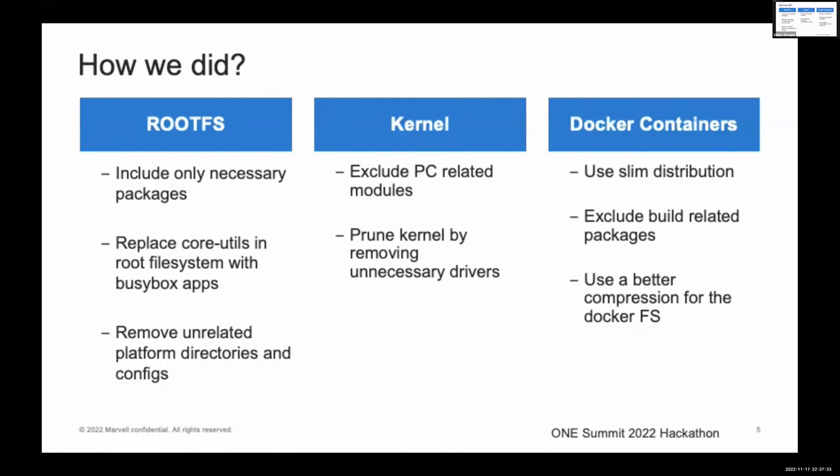For the docker containers, we did the following three optimizations. Currently, SONiC uses the full base distribution image for the docker containers. Instead of that, we used the slim distribution version of the docker image. The slim version is roughly half the size of the full version. We also removed build-related packages from the docker, like developer header files, man pages, compilers, editors, etc.